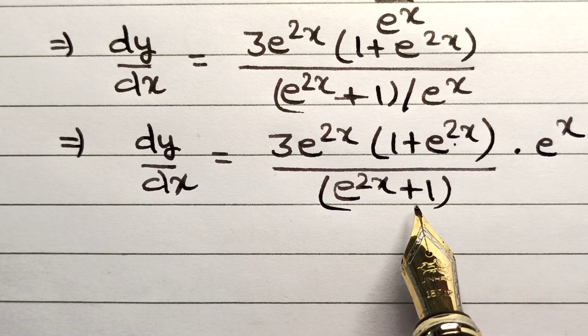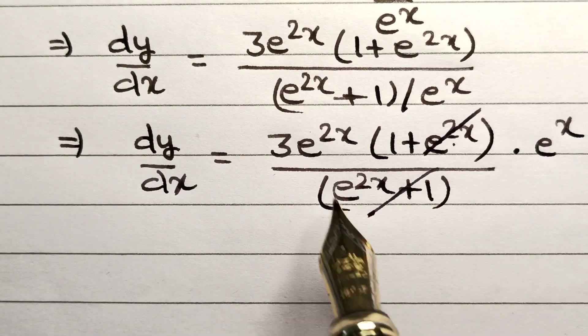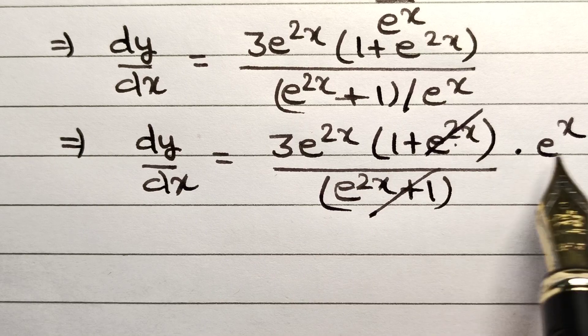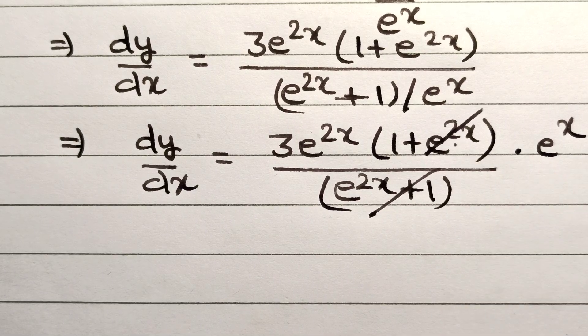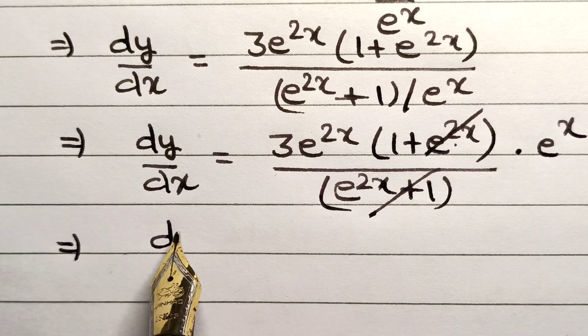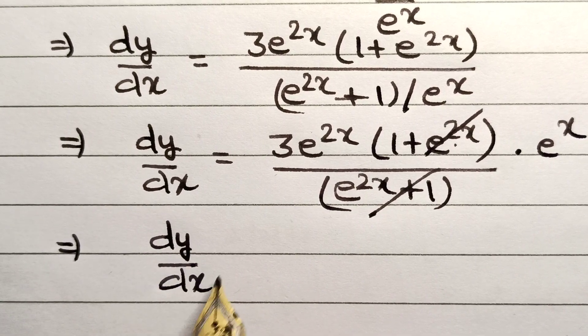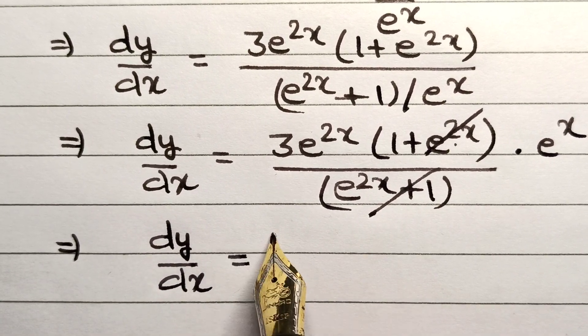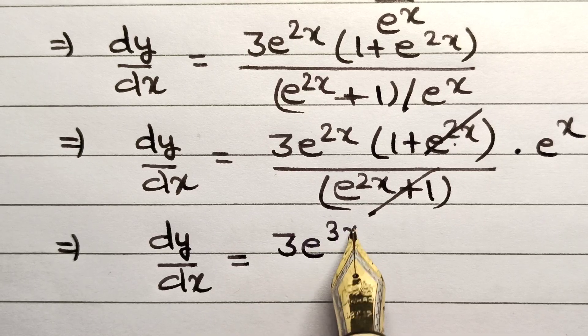As you can see, these two brackets are the same so they can be cancelled out. Since the base number is the same—that is e—the powers can be added. Ultimately, dy/dx equals 3e^(3x).